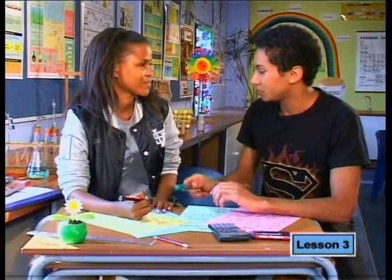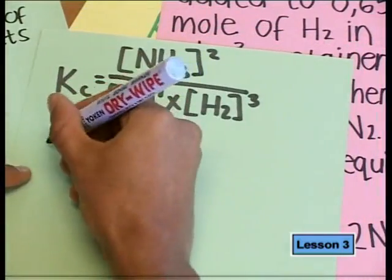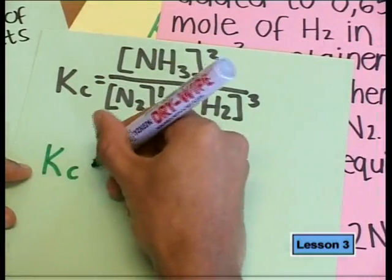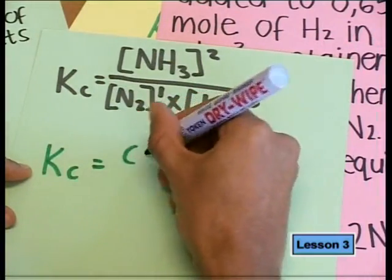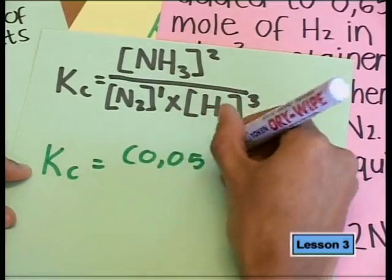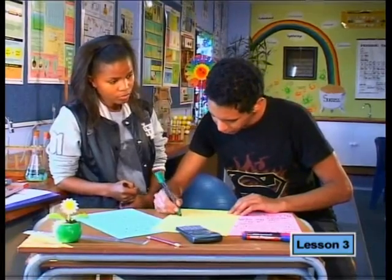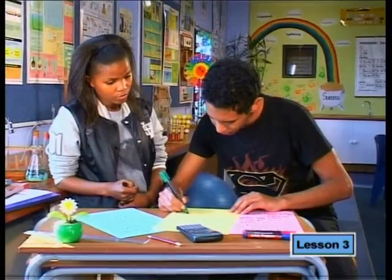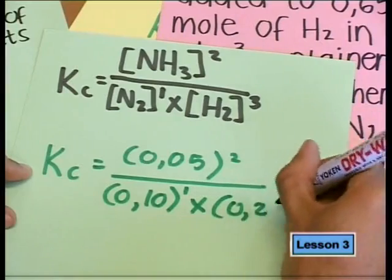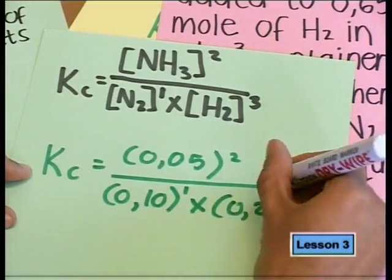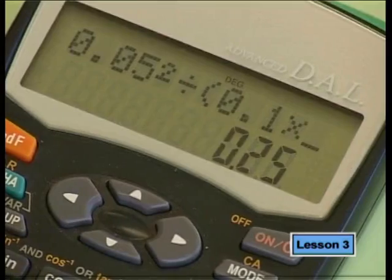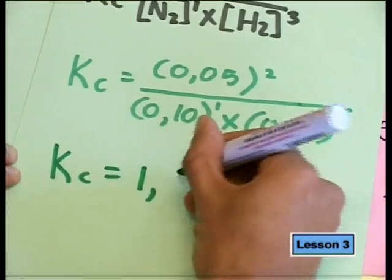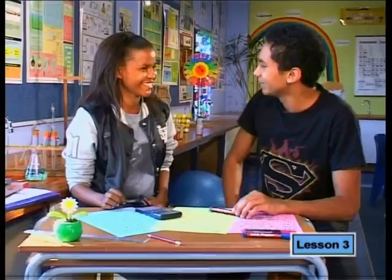Substituting the values from the RICE table: ammonia = 0.05, nitrogen = 0.10, hydrogen = 0.25. Working it out, the equilibrium constant Kc equals 1.6.